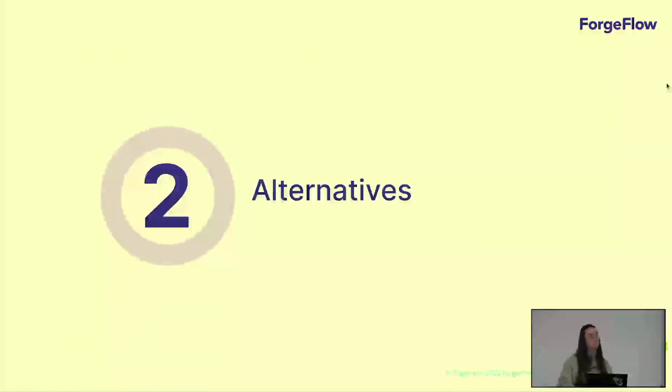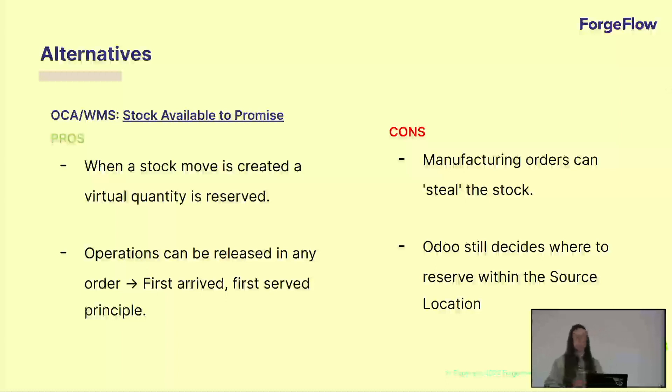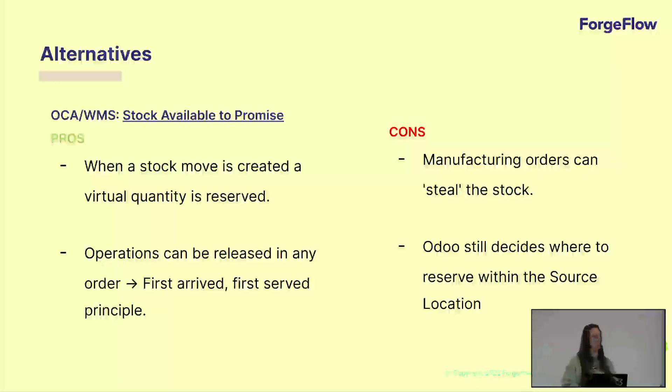There are some alternatives already in OCA that help us manage these reservations. For example, we have the stock available to promise module. This module is very useful because whenever a stock move is placed, a virtual reservation is done, and it has a method that ensures the first-arrived, first-served principle will always be accomplished. You can validate your operations in the order that you want, but this principle will always be met. It has some cons: manufacturing orders can still be stopped because they are not taken into account in this module, and Odoo still decides where to reserve these quantities.